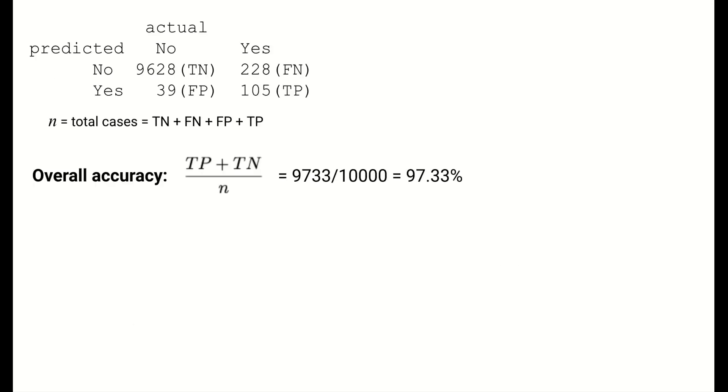Let's take a look at accuracy metrics that can be computed from a confusion matrix. Overall accuracy is the fraction of predictions that are correct, true positives and true negatives, over the total number of cases. Our logistic regression model for loan defaults has a high accuracy of 97.33%, but note that this overall accuracy has been computed on the training data.